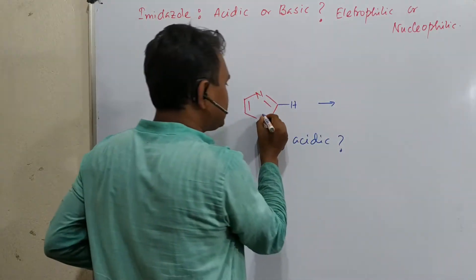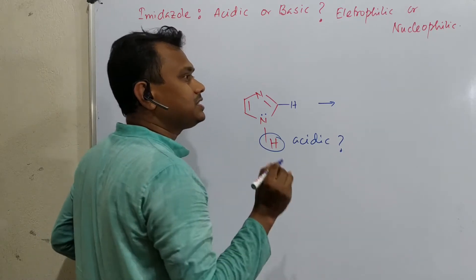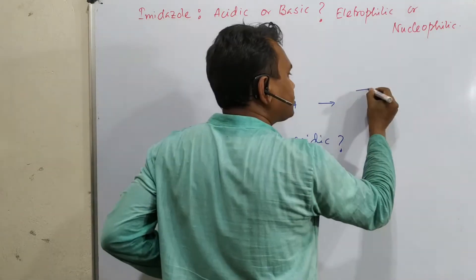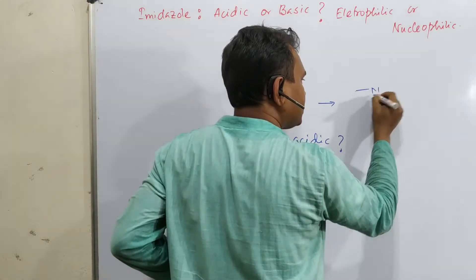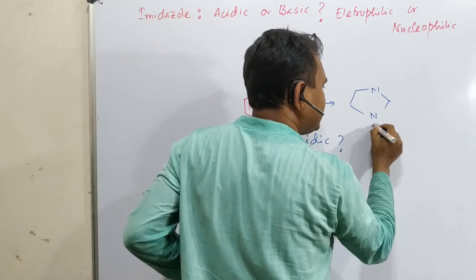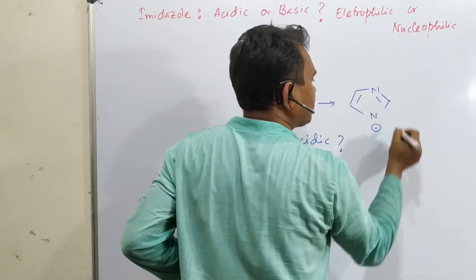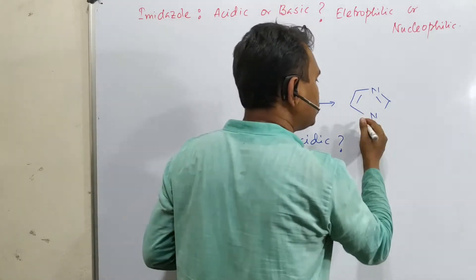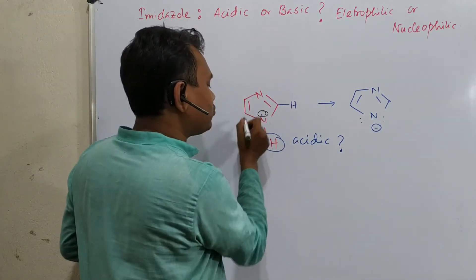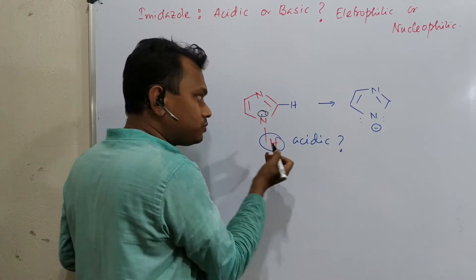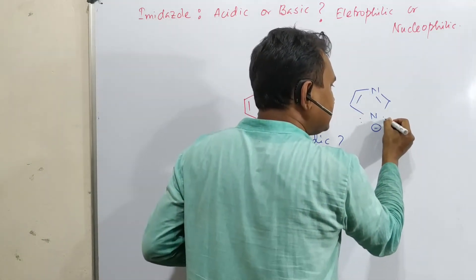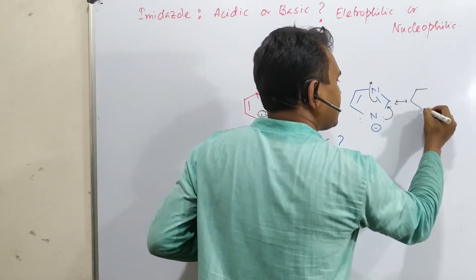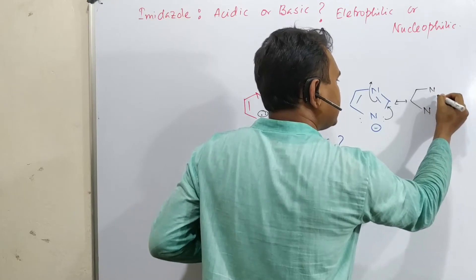Why? Because this nitrogen lone pair is part of a 5-membered aromatic ring with 6π electrons. After deprotonation, the resulting negative charge — meaning there are now two lone pairs — can be stabilized by resonance. One lone pair was previously there, and one is generated by removal of this proton. The lone pair can delocalize around the ring.